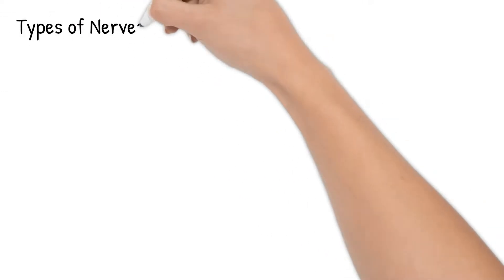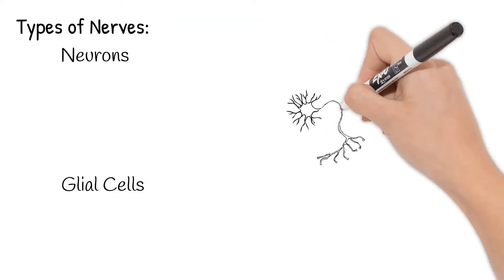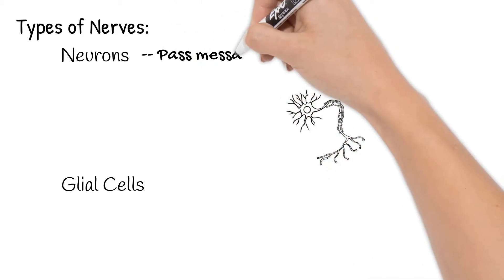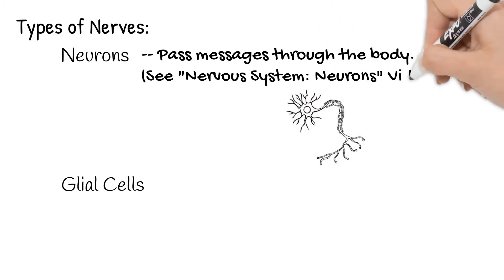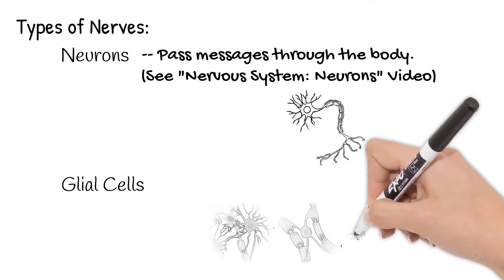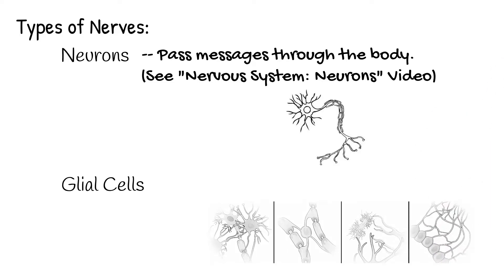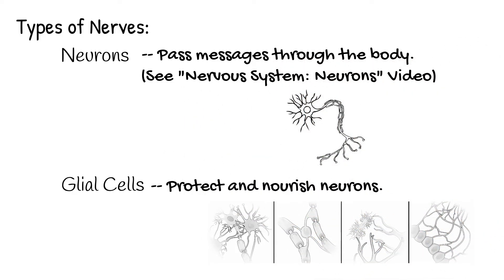To break it down further, there are two types of nerves: neurons and glial cells. Neurons are the body's communication passing those messages and will have its own whole video explaining how they do this. Glial cells are smaller and do not transmit messages, but instead protect and nourish the neurons, helping them form and function properly.